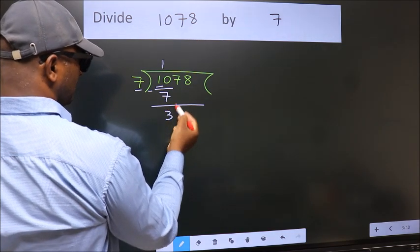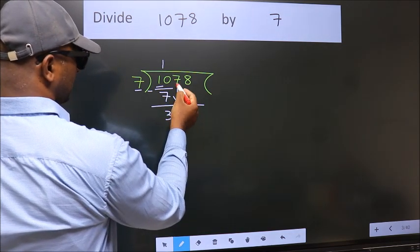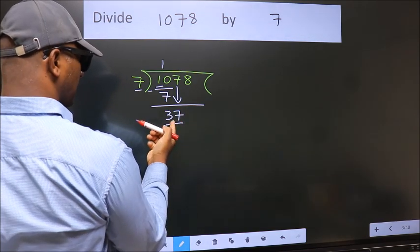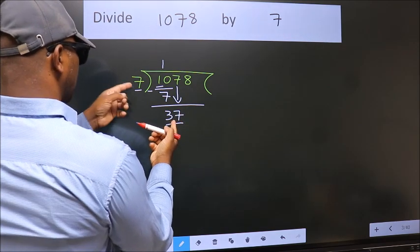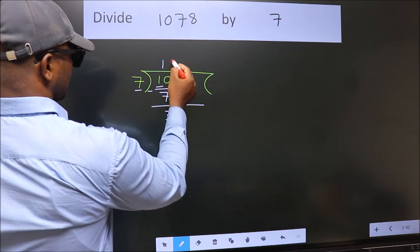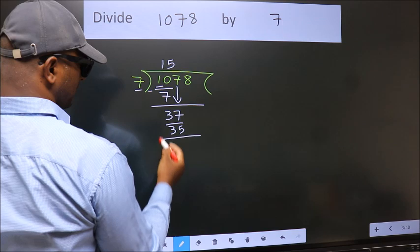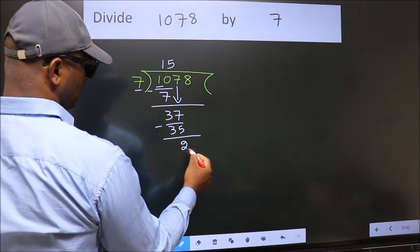After this, bring down the beside number. 7 down, so 37. A number close to 37 in the 7 table is 7 fives 35. Now we subtract. We get 2.